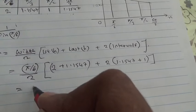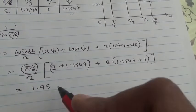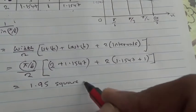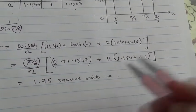Do that in the calculator, you're going to end up with 1.95 square units. Here's your answer for the first part. For the second part, first part is done.